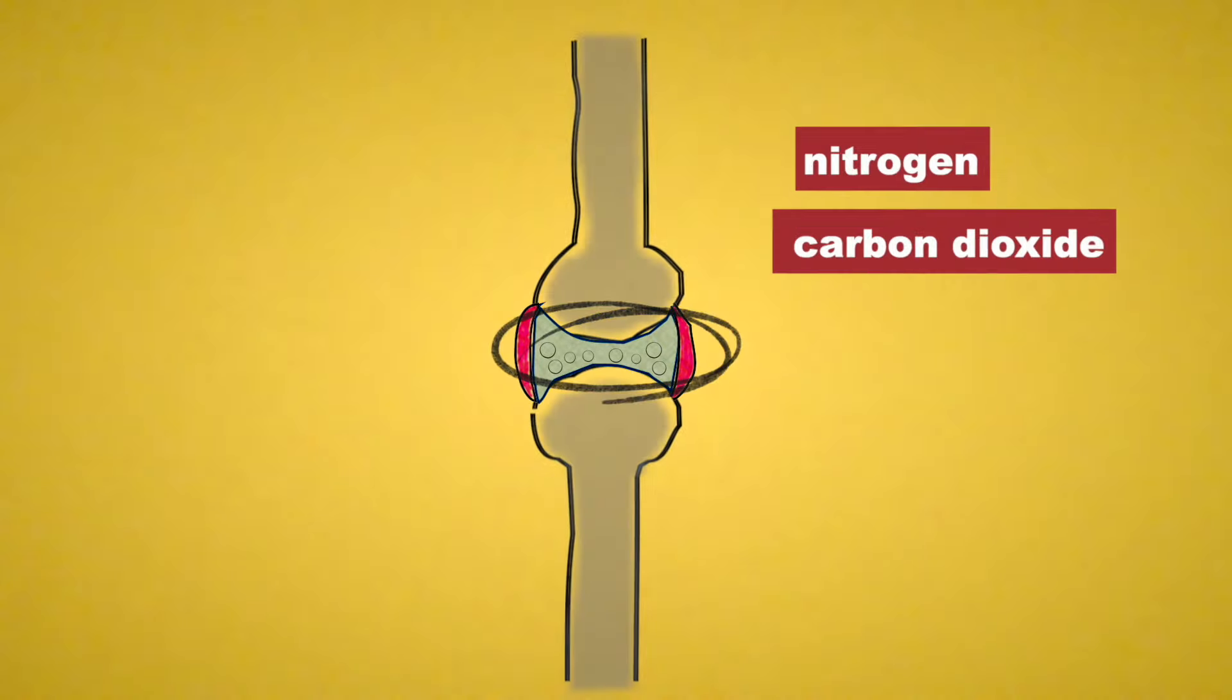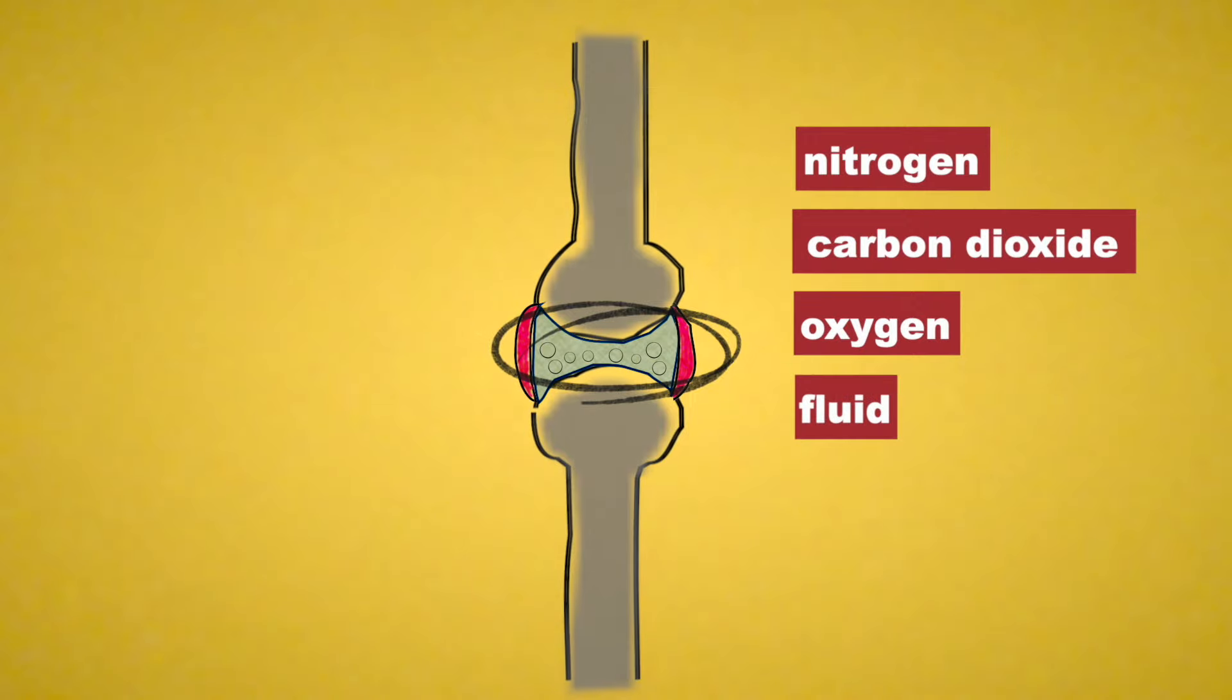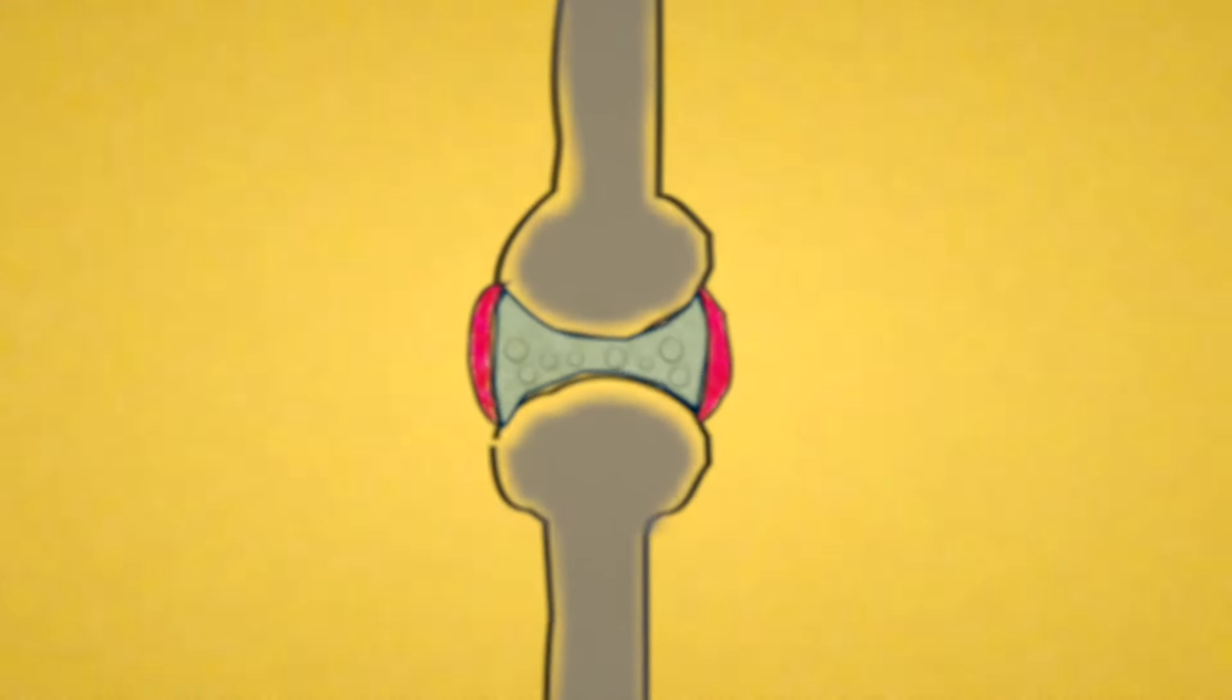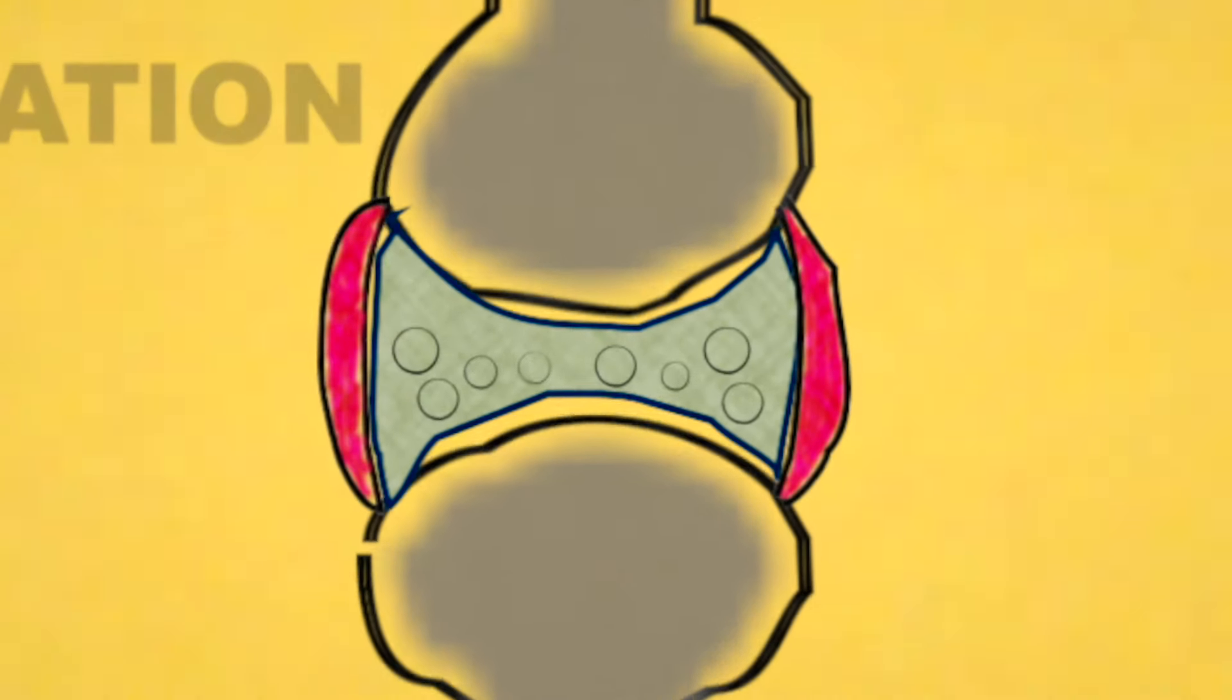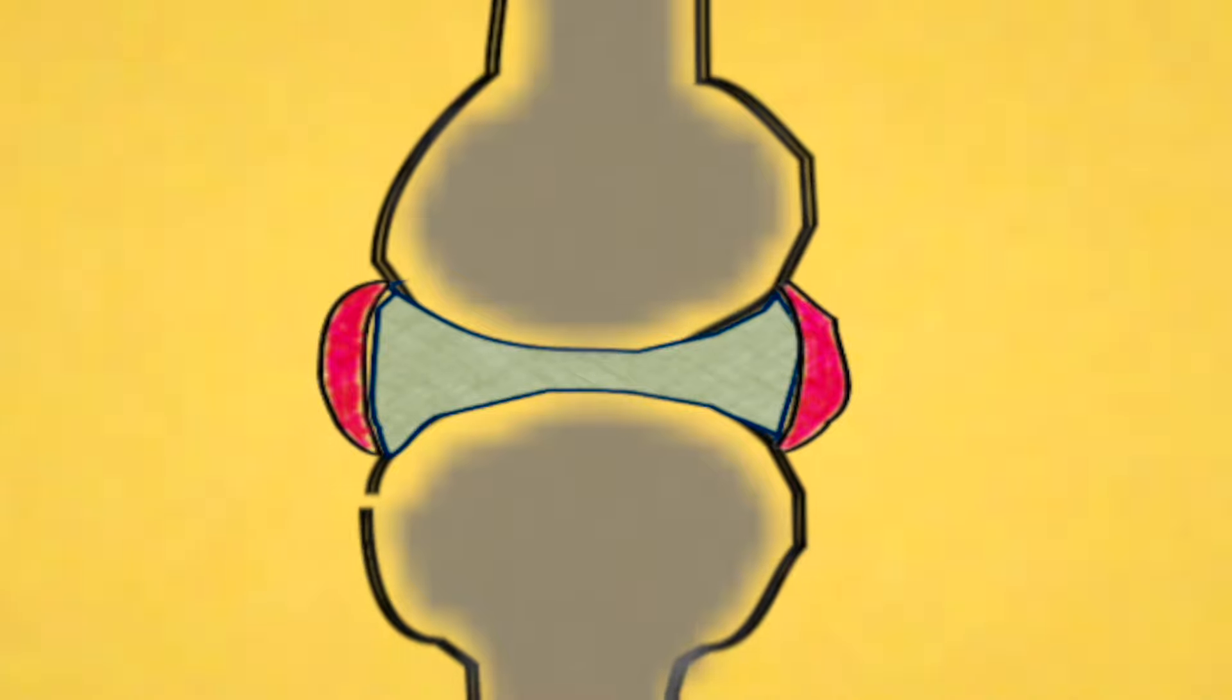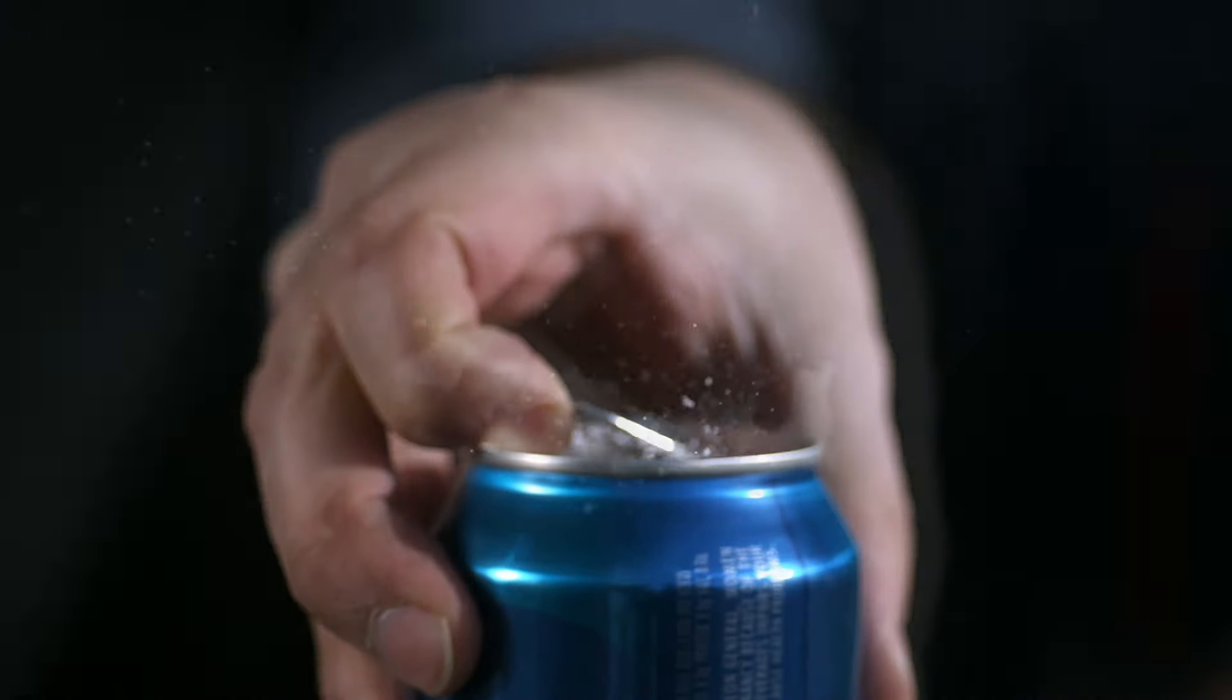Joints contain nitrogen, carbon dioxide, oxygen, and fluid to lubricate the bones. When cracking your neck, the popping sound is a result of cavitation, what occurs when negative pressure is put on a liquid to create gas bubbles. It's similar to opening a can of soda.